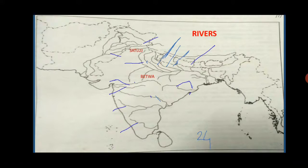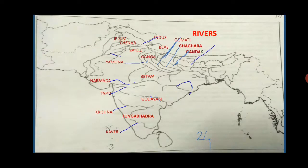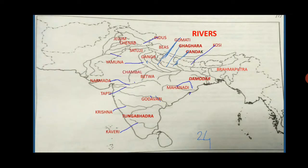Any one will be asked in the exam. Starting from the south you have Kaveri, then Tungabhadra, Krishna, Godavari, Tapti, Narmada, Yamuna, Chenab, Jhelum, Indus, Beas, Ganga, Gomti, Ghaggar, Gandak, Kosi, Brahmaputra, Damodar, Mahanadi, Chambal, Son, and Ravi. These are the 24 different rivers which have been shown.